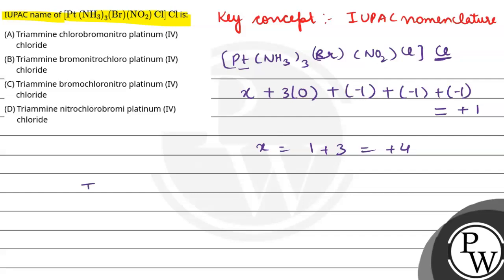Now, this is triamine. Why triamine? Because there are three amines. Now, what do we need to do? Alphabetically. This is bromo, this is nitro, and this is chloro. So from B, then it's chloro, then nitro. And then we have platinum, and the oxidation state is 4.